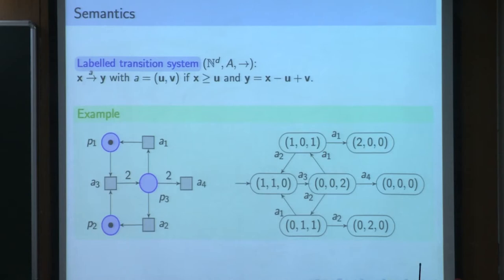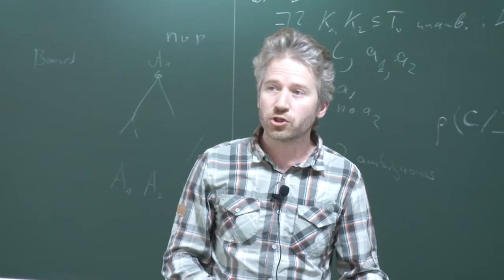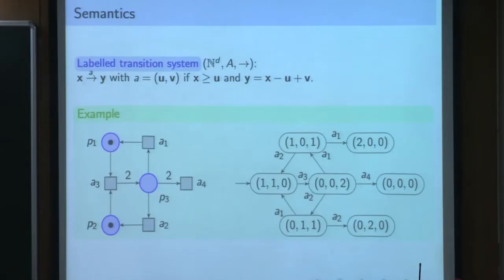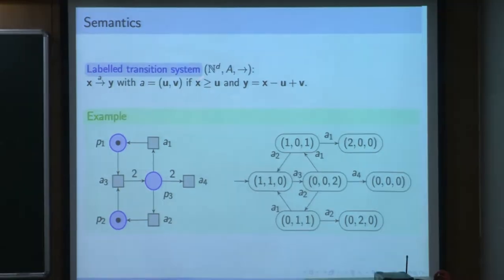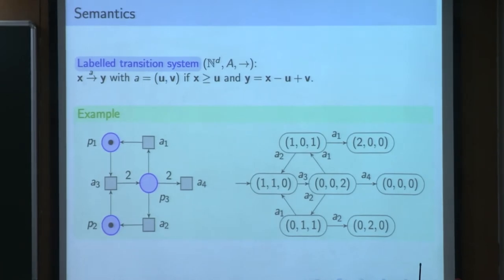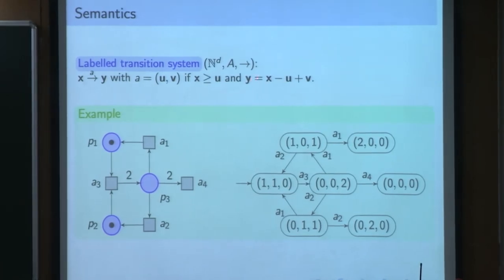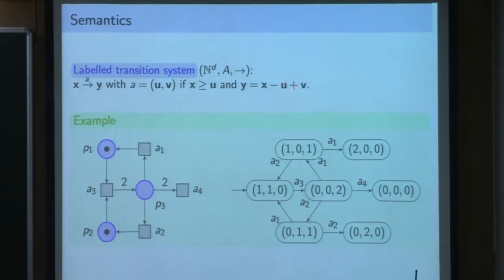In our case for a Petri Net it's a vector of natural numbers. Labels are just the actions of the Petri Net. The transition relation is given as follows: you can move from a configuration X to a configuration Y using the action A, where A is the pair of vectors UV, if X is larger than or equal component by component to U. The new configuration Y is obtained from X by removing that vector U and then adding V. For instance, if I would like to draw the reachable part of the transition system starting from the configuration 1 1 0 - which means one token in place P1.